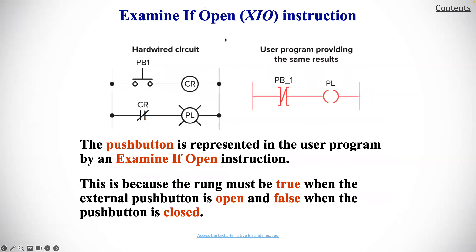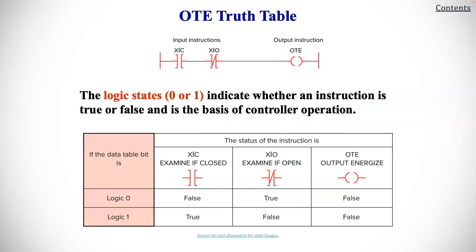For the XIO instruction, the push button is represented in the user program by the examine if open, XIO instruction. This is because the rung must be true when the external push button is open and false when the push button is closed.